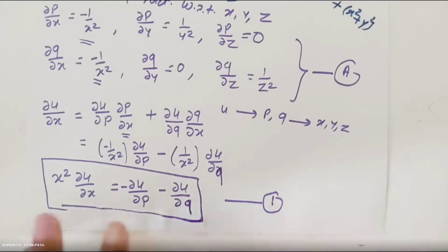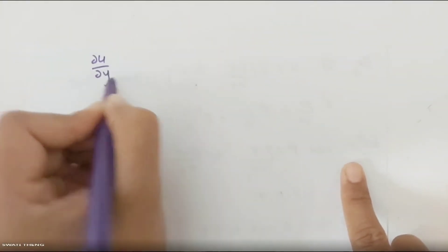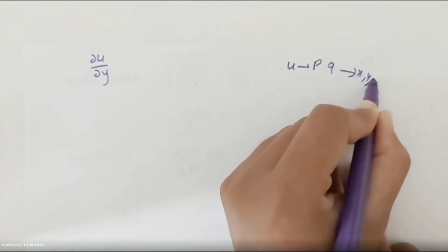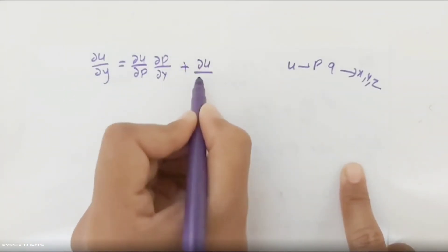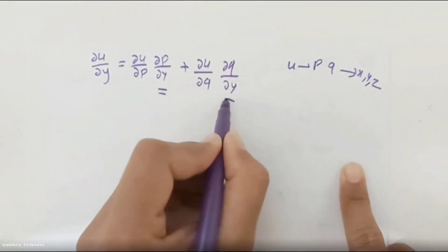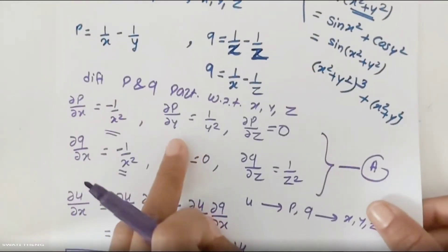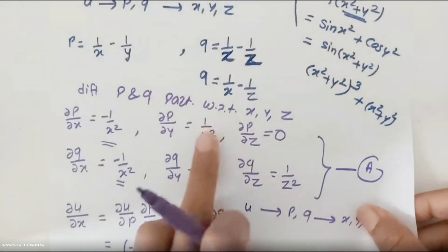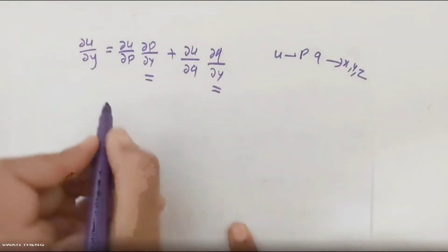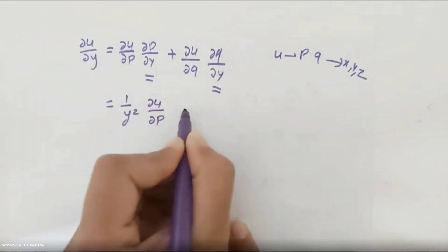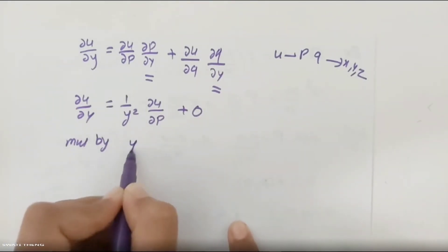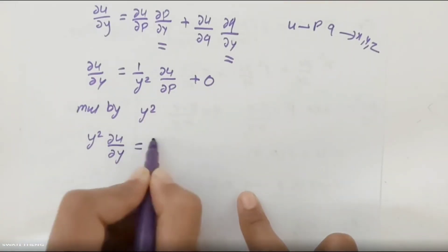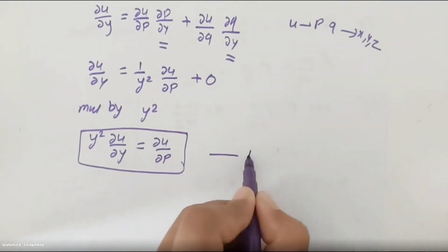Next, we take the partial derivative of u with respect to y using the chain rule: ∂u/∂y = (∂u/∂p)(∂p/∂y) + (∂u/∂q)(∂q/∂y). Here ∂p/∂y = 1/y² and ∂q/∂y = 0. So the second term vanishes. Multiplying through by y², we get: y²(∂u/∂y) = ∂u/∂p. This is Equation 2.